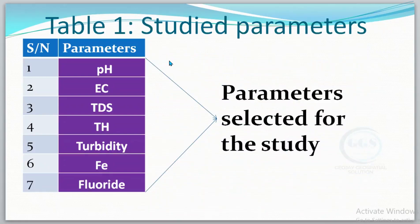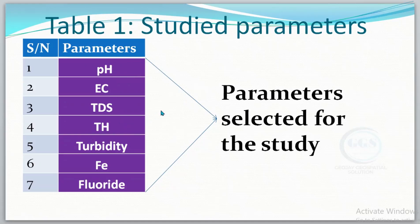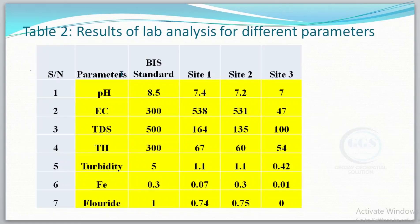The results you get will be based on the parameters under investigation. For example, these are the physical and chemical parameters we want to analyze for our water. These parameters can vary from one study to another depending on your interest or the objective of your study. After analyzing for all these parameters, let's assume these are the results we got: for Site 1 these are the results, Site 2 these are the results, and Site 3 these are the results for all the parameters selected.